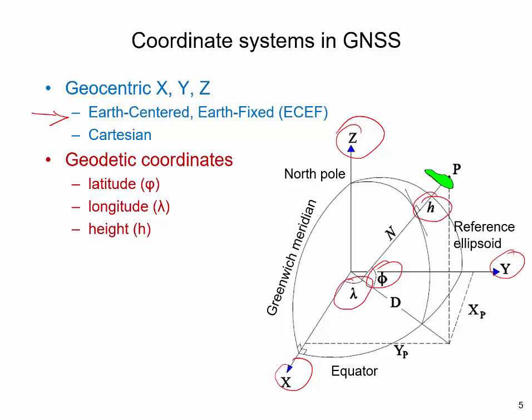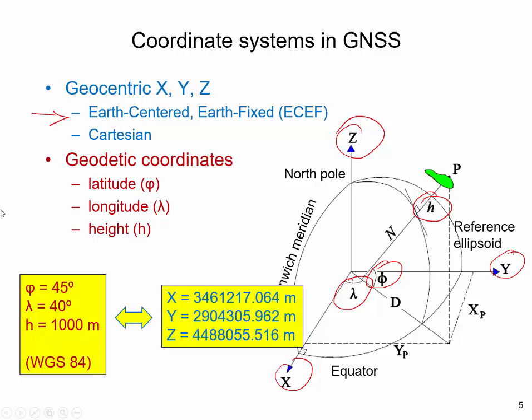The ellipsoid and its position relative to the Earth, and therefore also the origin and orientation of coordinate axes in the Earth-centered, Earth-fixed coordinate system, is defined through the geodetic datum, which, in the case of GPS, is WGS84. Geocentric X, Y, Z coordinates can be converted to geodetic coordinates and the other way around through mathematical equations.